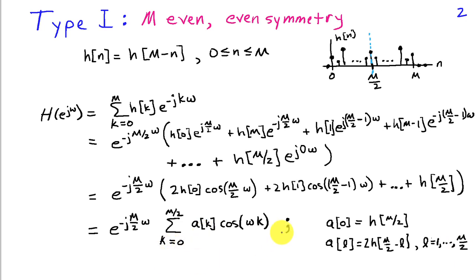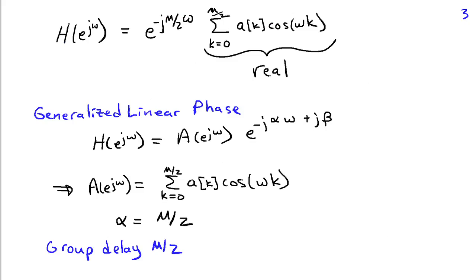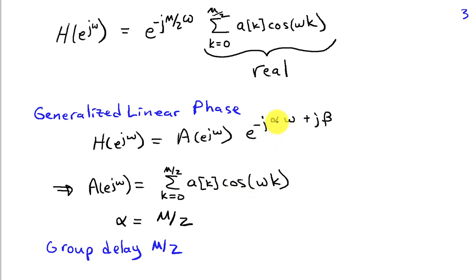This form leads to insight into the nature of this filter. The A_k coefficients are real because we assume the impulse response is real valued, and the cosines are real, so this is a real function multiplied by the phase factor. We can see that this Type 1 FIR filter satisfies the generalized linear phase property, with the real function A of e to the j omega being this sum of cosines, and alpha — the group delay — equal to M over 2.